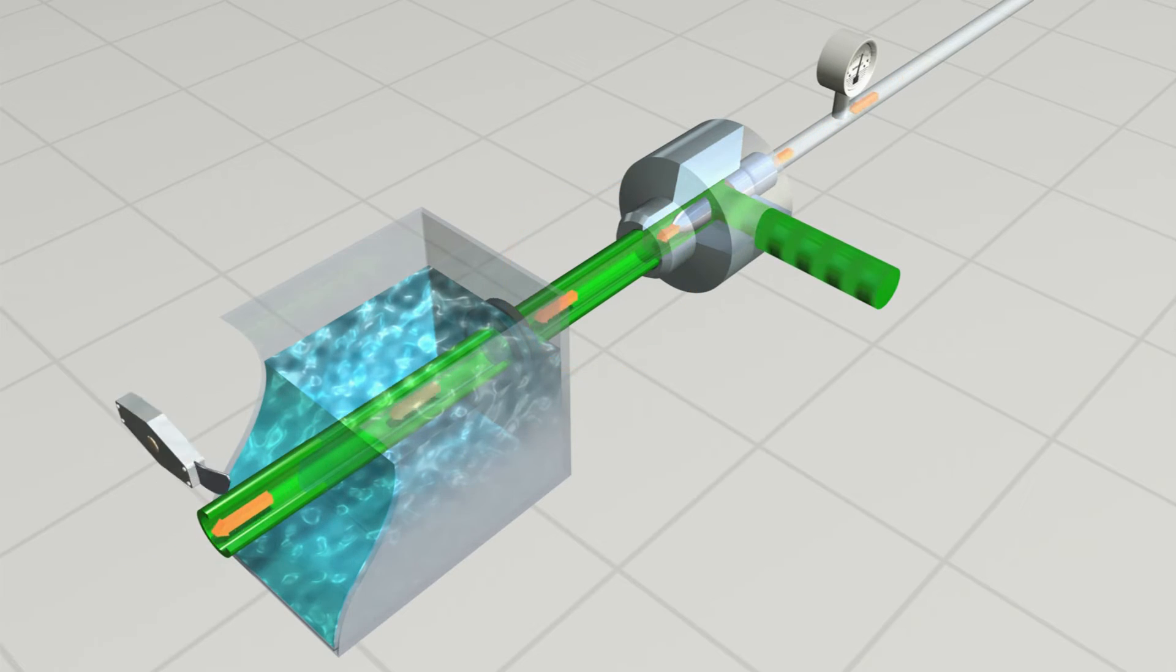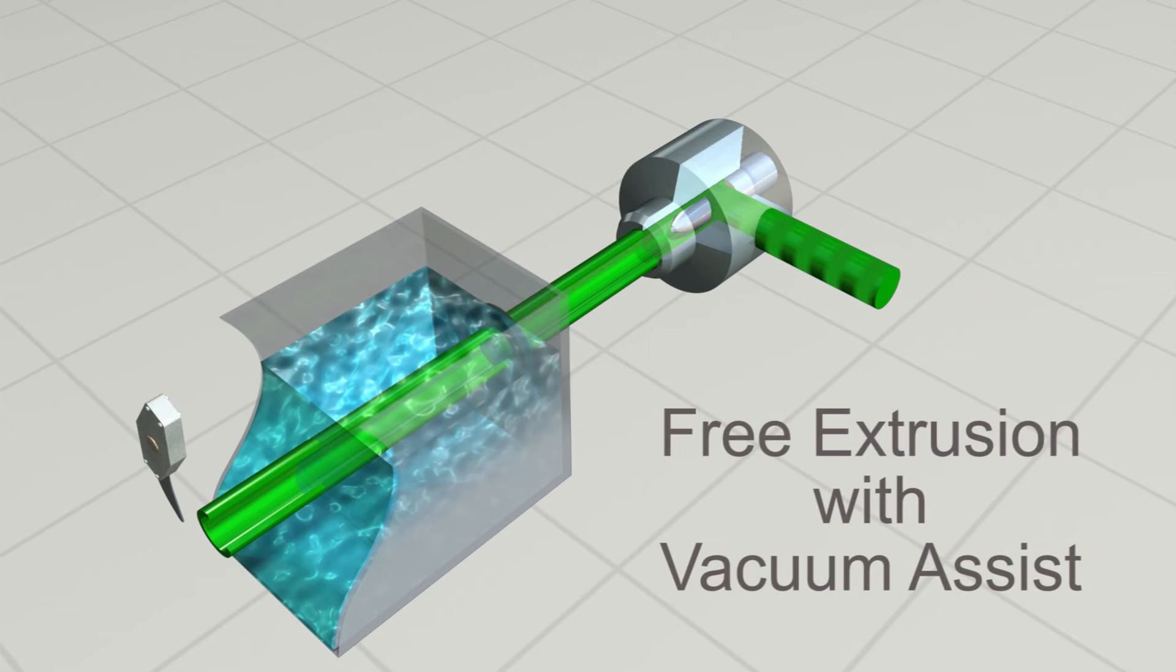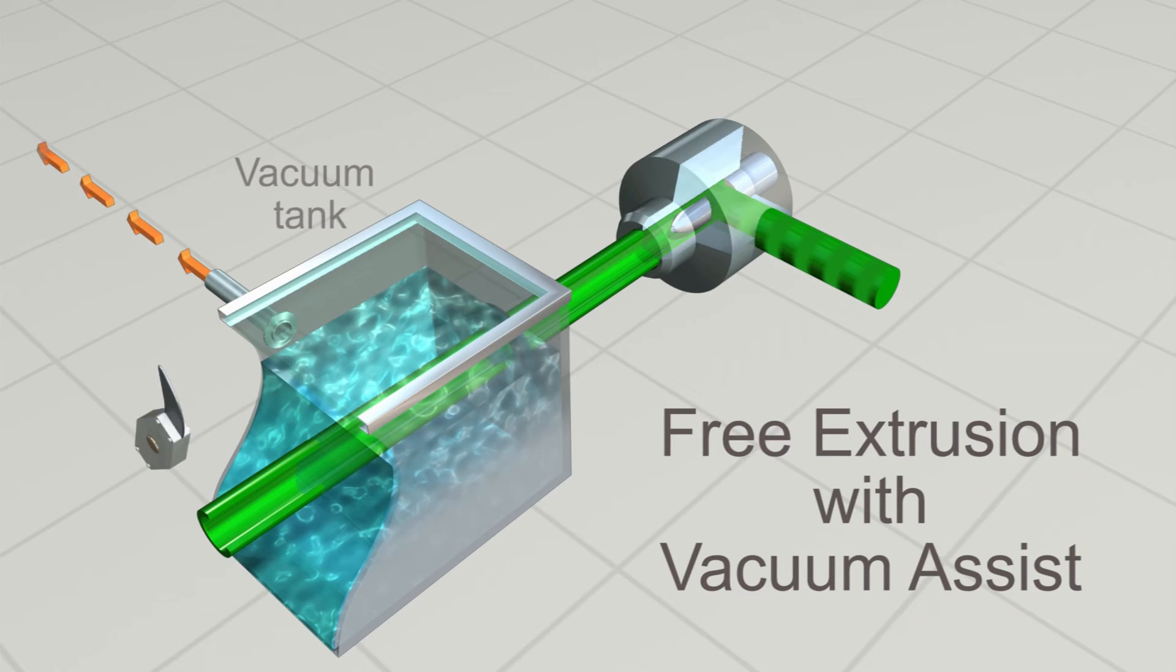An alternative technique is to use what is referred to as free extrusion with vacuum assist. With this refined process, a vacuum tank is employed, but no compressed air is required.